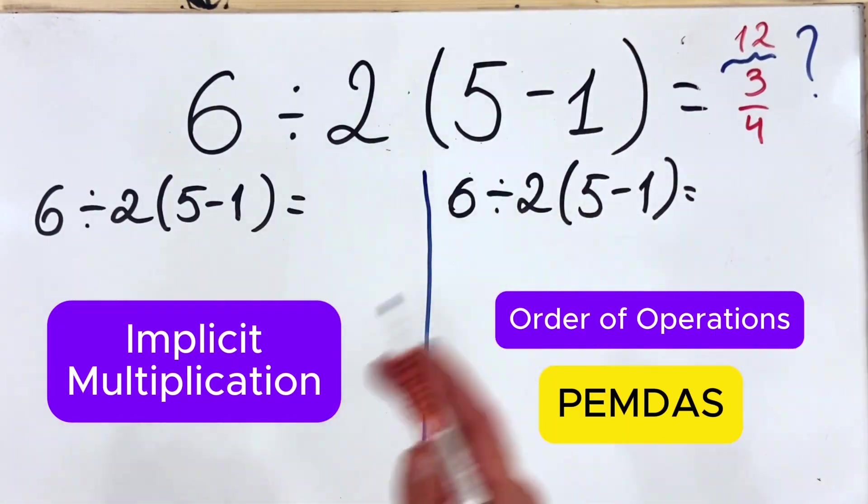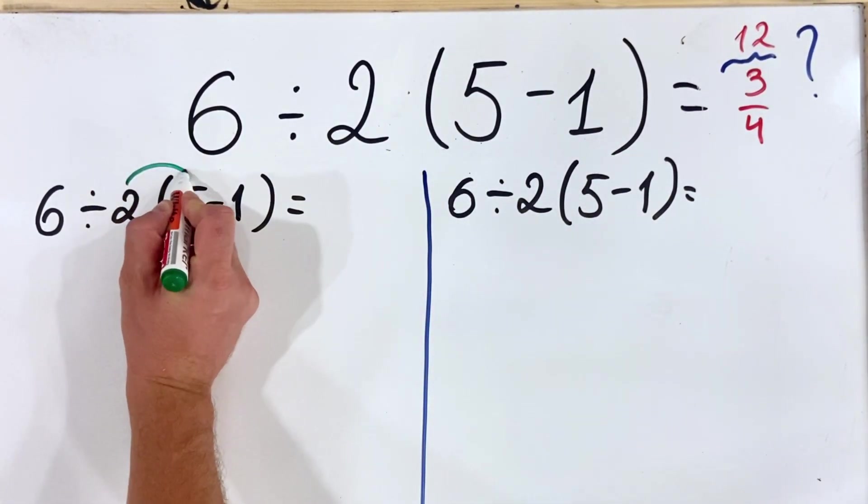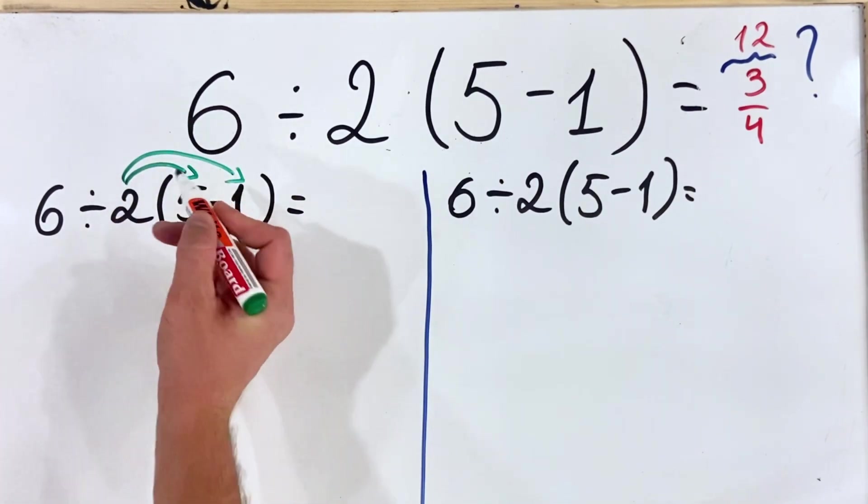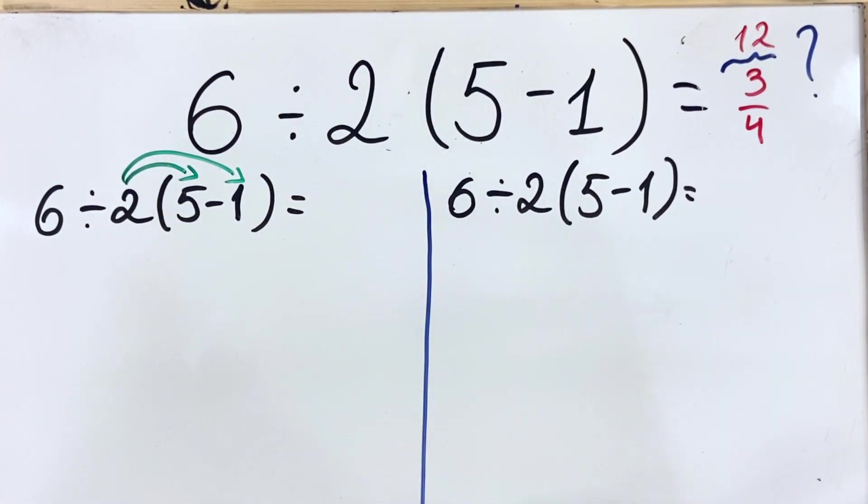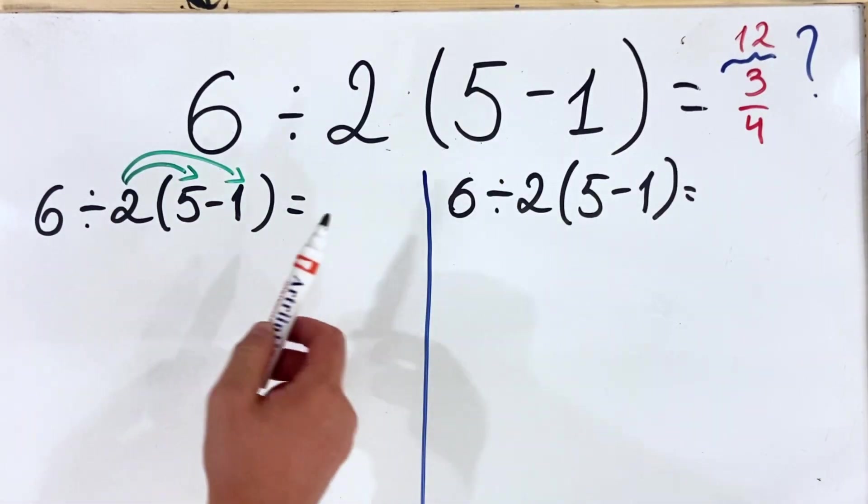So let's calculate both and then decide which approach is correct. First, we will calculate, as some people are doing online, the implicit multiplication.